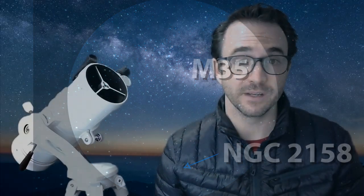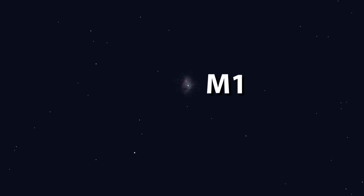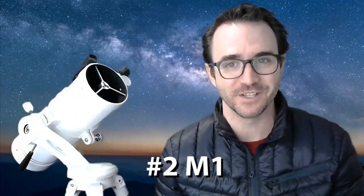Now moving on to target number 2, which is called, well, M1. Through your telescope, it will look something like this. Yes, a little smudge, or as astronomers call it, a beautiful smudge.